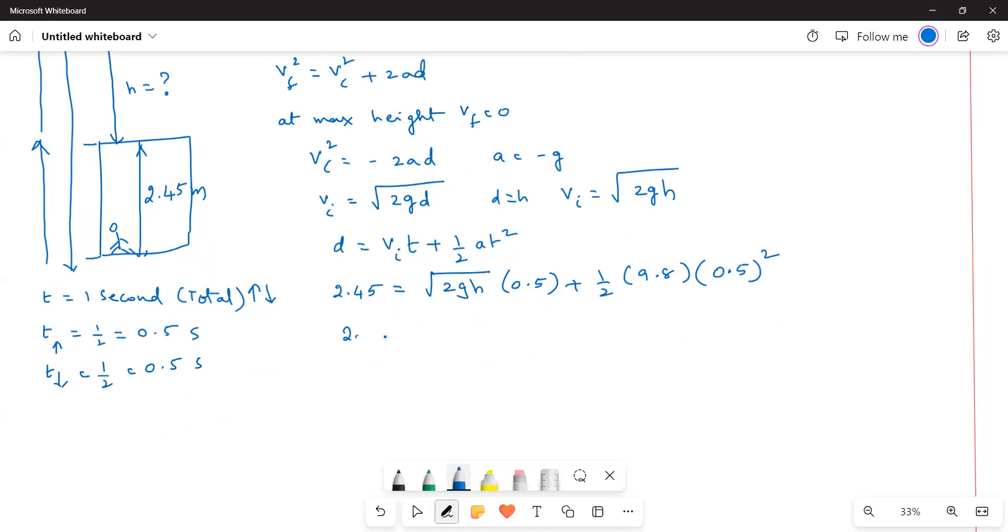2.45 is equal to root 2GH times 0.5. This one is 0.5, so this is 0.25. This is 1 by 2 squared, so 1 by 4. This one, 1 by 8, 9.8 by 1 by 8. 9.8 by 8 gives us the value of 1.225. So root 2GH is equal to 2.45 minus 1.225 divided by 0.5.